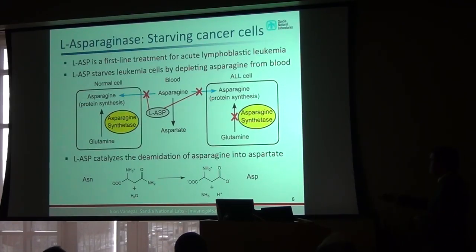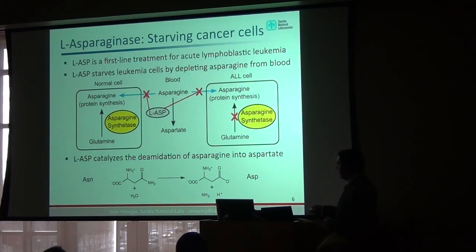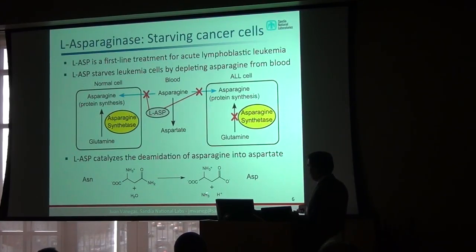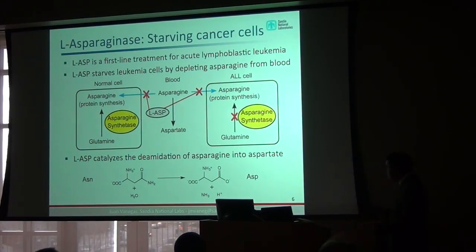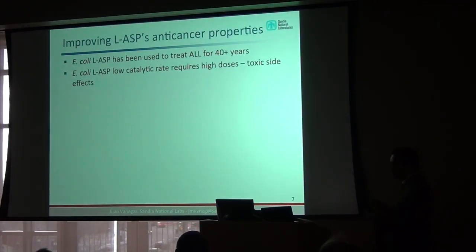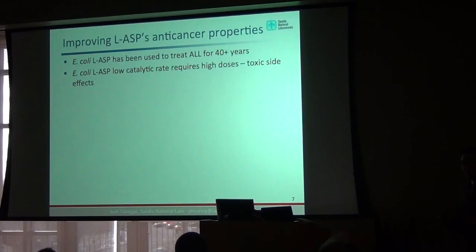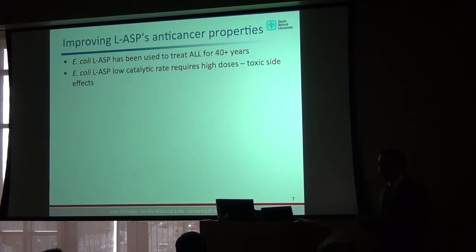Chemically, the enzyme takes the amino acid asparagine and exchanges the NH2 group for an oxygen, using a water molecule, with ammonia and a proton as byproducts. The treatment has been used for over 40 years but is not perfect. The first problem is a low catalytic rate — the enzyme is not very good at this reaction — meaning high doses are needed, which causes toxic side effects.